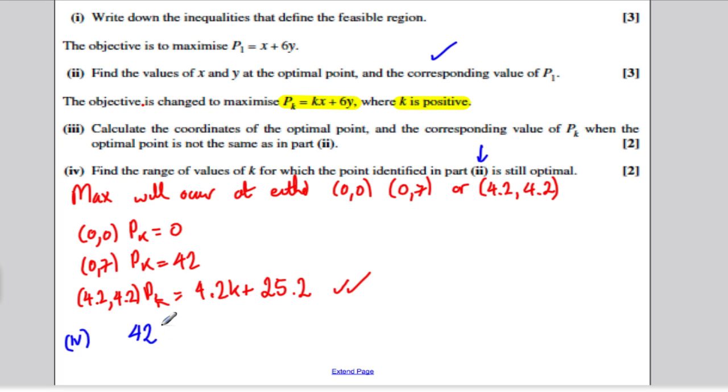So if we're trying to find the range of values where this is still optimal, we're looking for where 42 is bigger than 4.2K plus 25.2. Subtracting 25.2 off both sides, 42 minus 25.2 is 16.8. So we get where 16.8 is bigger than 4.2K and dividing both sides by 4.2, we're getting where 4 is bigger than K, or an easier way of saying that, where K is less than 4. So when K is less than 4, this is still the optimal solution. When K is bigger than or equal to 4, this becomes the optimal solution.